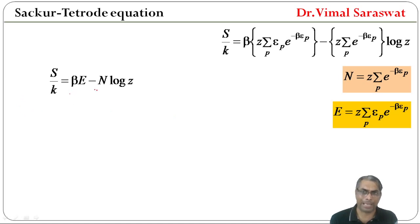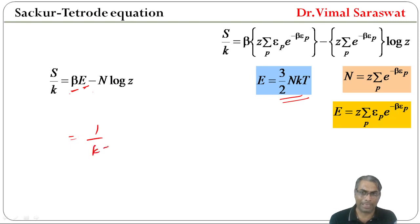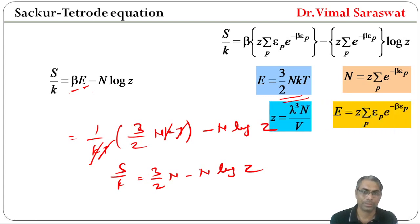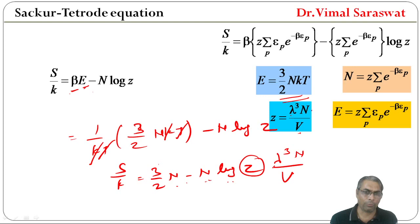So S/k = βE − N·log Z. Substituting E = (3/2)NkT and β = 1/kT, we get S/k = (1/kT)·(3/2)NkT − N·log Z = (3/2)N − N·log Z. And since Z = Nλ³/V, substituting gives S/k = (3/2)N − N·log(Nλ³/V).